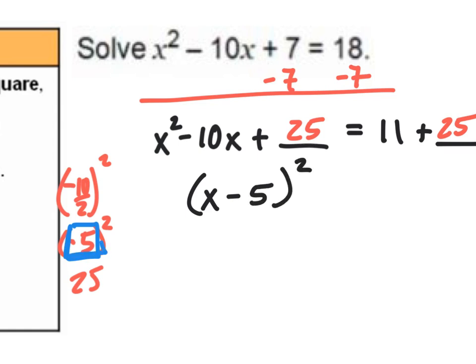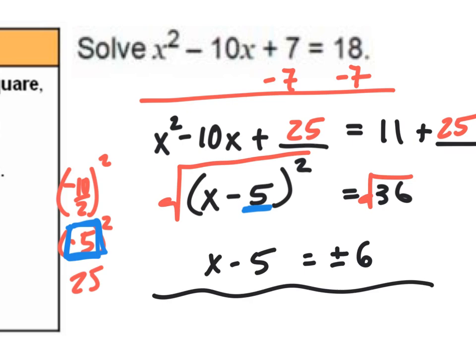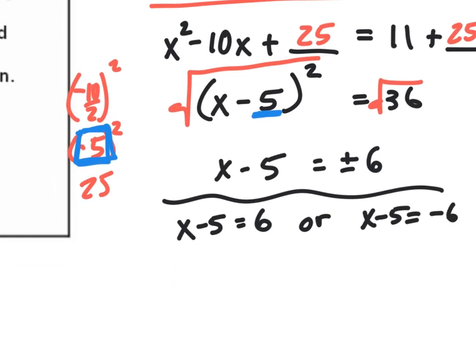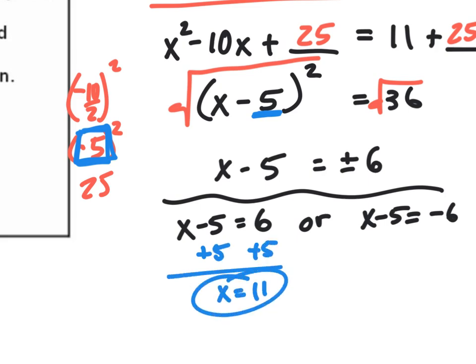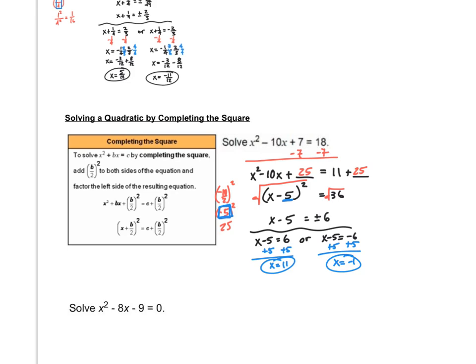The negative five comes from dividing that middle term by two. Taking the square root of both sides gives x minus five equals plus or minus six. So x minus five equals six gives x equals 11, and x minus five equals negative six gives x equals negative one. That's the process — it works every single time. This is a quadratic, it's just a process.